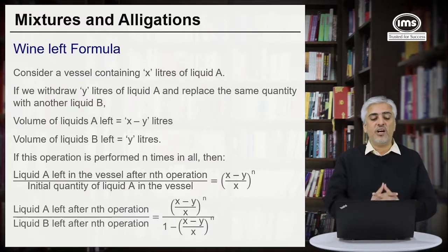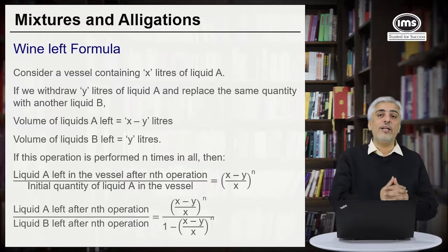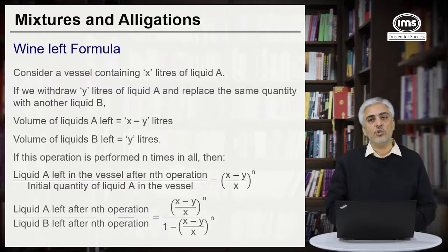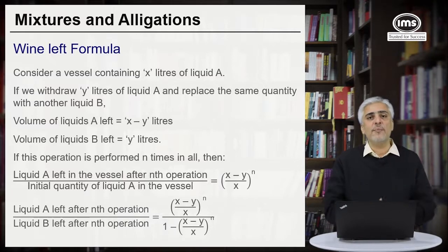Liquid A left after the nth operation upon liquid B left after the nth operation can also be given by this formula. It will be (x minus y upon x) raised to n upon 1 minus (x minus y upon x) raised to n. Whichever formula we will use depending on the question.